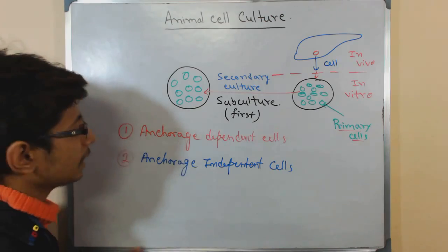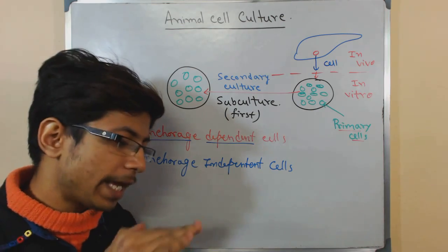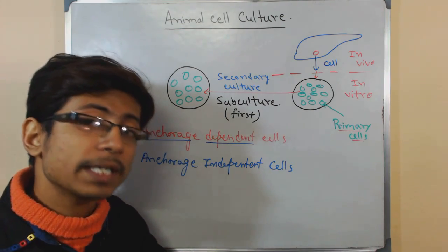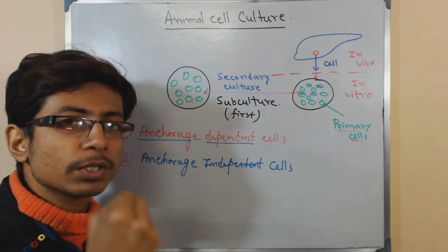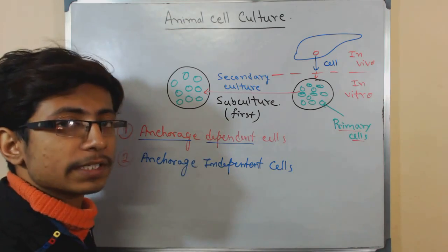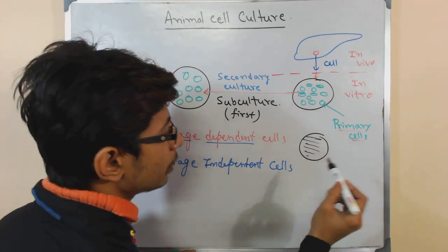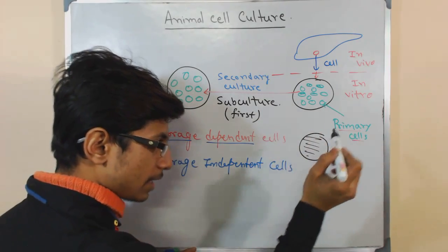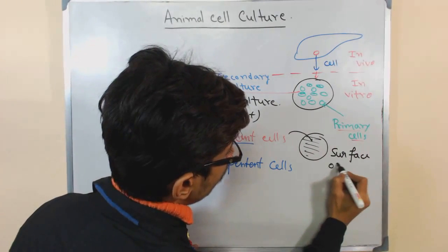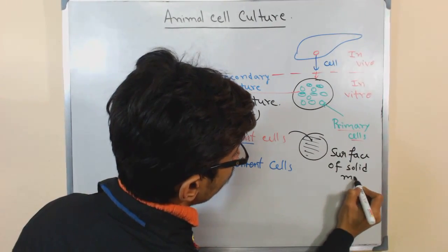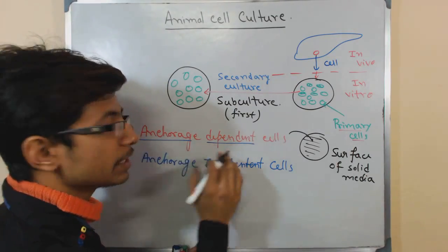The anchorage dependent cells, as the term suggests, means those cells can only grow if they have a solid surface — otherwise they will not grow. For the growth of anchorage dependent cells, they require solid anchorage to a solid surface and they can only grow on the surface region. If we have a media here and you have the surface area of the media, it will grow onto the solid media surface. Without any solid anchorage, those cells will die.